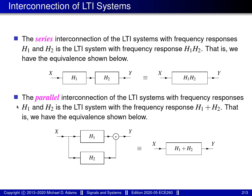For parallel interconnections: the parallel interconnection of two LTI systems behaves as a single LTI system with an impulse response equal to the sum of the individual impulse responses. Using the linearity property of the Fourier transform, two LTI systems with frequency responses H1 and H2 connected in parallel behave as a single system whose frequency response is the sum H1 plus H2.